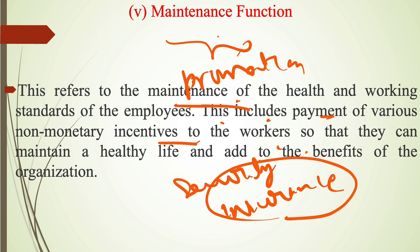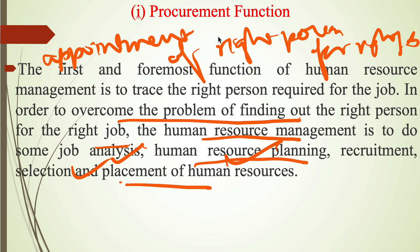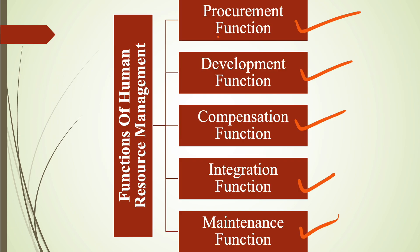To summarize, there are five basic functions of human resource management: procurement function, development function, compensation function, integration function, and maintenance function.